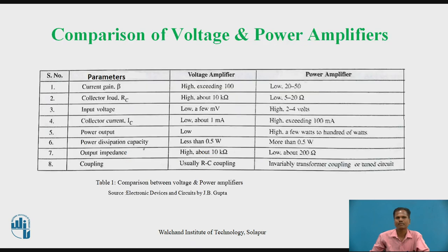Now let us compare a voltage amplifier and a power amplifier, considering the parameters. Regarding current gain: for a voltage amplifier, high current gain transistors are used — current gain greater than 100. Whereas the current gain of the transistor in a power amplifier is low, in the range of 20 to 50. Collector load for a voltage amplifier is high, about above 10 kilo ohm, and for a power amplifier it is low, in the range of 5 to 20 ohm.